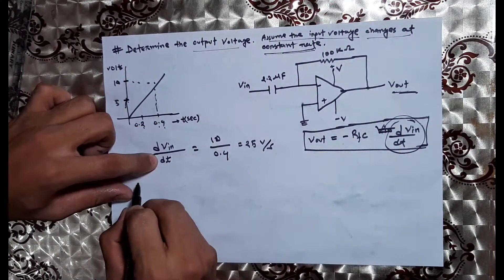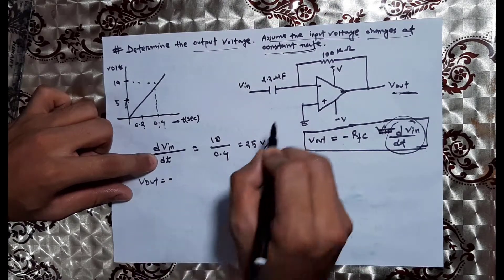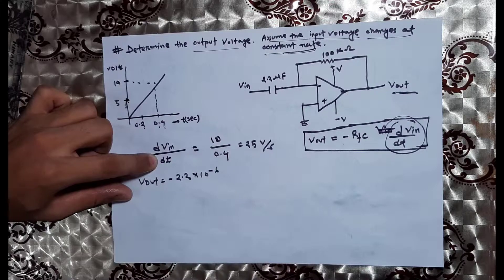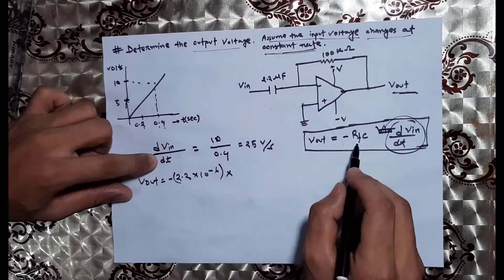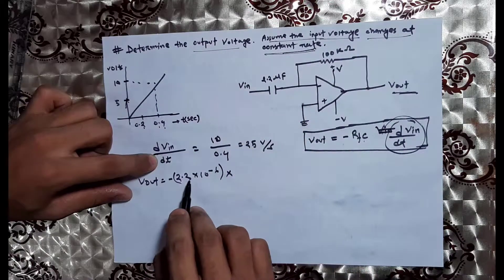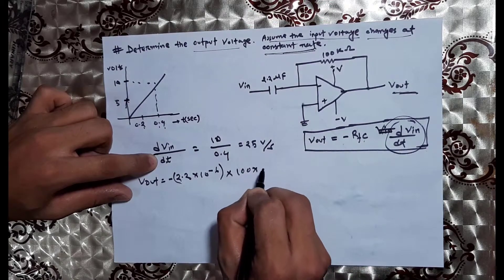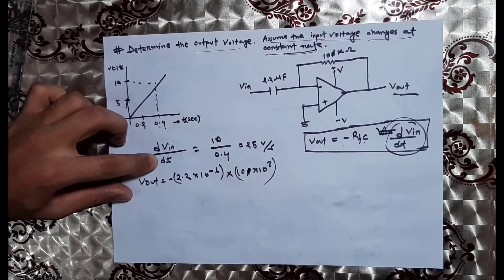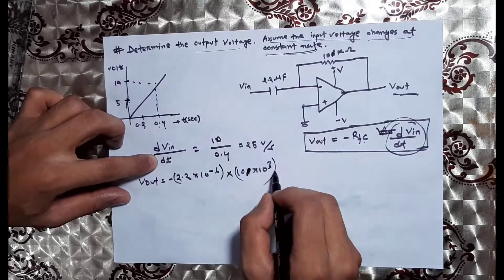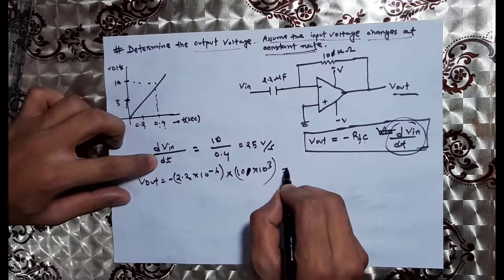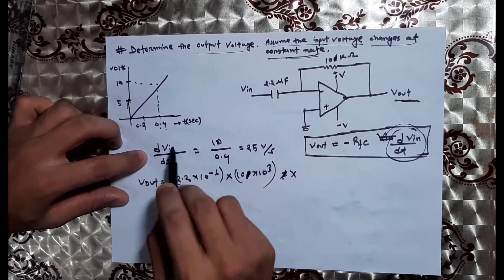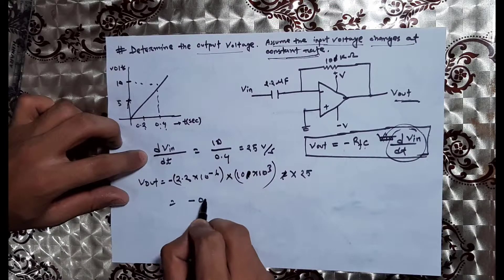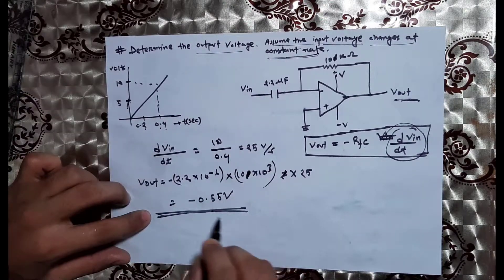We have dVin/dt, then V output. V output is equal to minus Rf, where Rf is 2.2 microfarad — 2.2 into 10 to the power of minus 6 farads. So the calculation gives dVin/dt, with the process change giving approximately 25, such that the output voltage is 0.55 V.